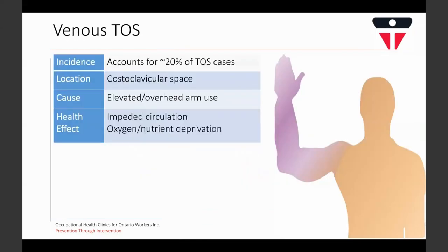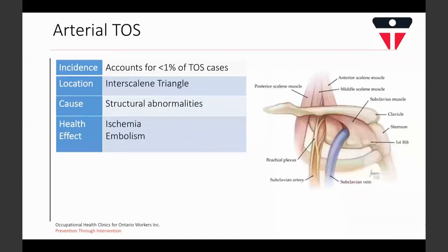Venous thoracic outlet syndrome accounts for 20% of cases. It occurs within the costoclavicular space and is often caused by elevated or overarm use. The main health effect is impeded circulation or oxygen and nutrient deprivation. Arterial TOS occurs within the interscalene triangle and is often caused by structural abnormalities such as being born with an extra rib. The main health effects are ischemia and possible development of an embolism.